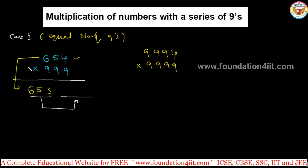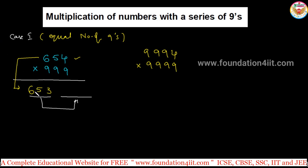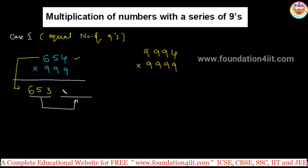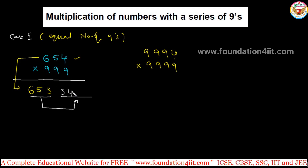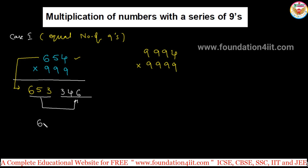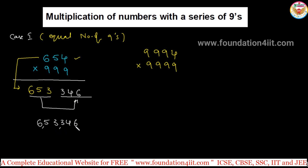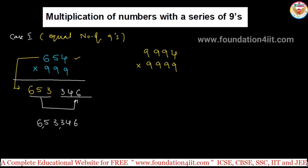Step 2: For the next three digits, subtract each digit of 654 from 9. So 9 minus 6 is 3, 9 minus 5 is 4, 9 minus 3 is 6. The final answer is 653346, which is 6 lakh 53 thousand 346. That is the result when there is an equal number of 9s.